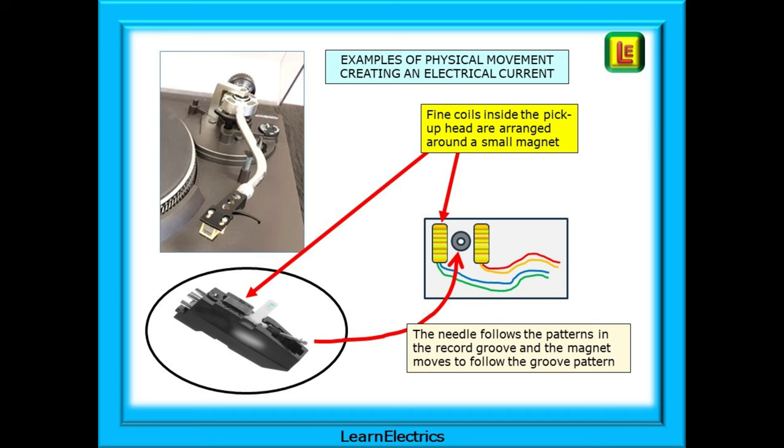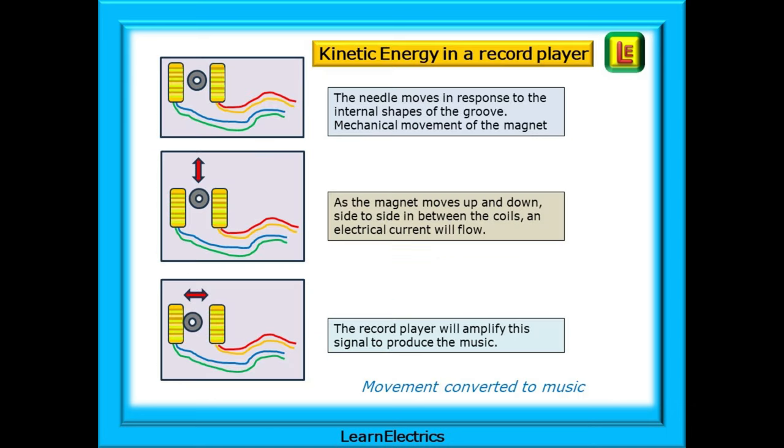Let's begin by looking at some common examples of a physical movement creating an electrical current. We should all be familiar with the record player. There are some very fine curls of wire inside the pickup head arranged around a very small magnet attached to the pickup needle. The needle follows the patterns in the record groove and the magnet moves to follow the groove pattern. The lumps and bumps of the record groove will give us high fidelity music.